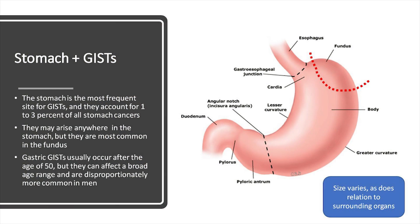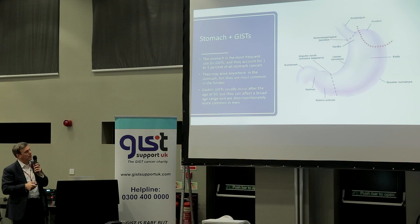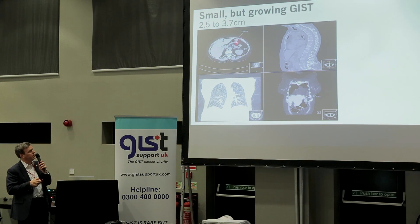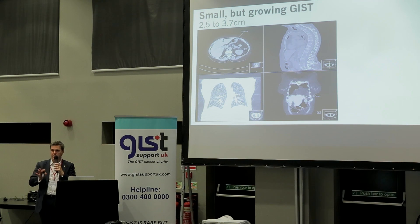Some of the surgery is dependent on the organ of origin. The stomach is the most common site for GISTs, and they most commonly occur in the fundus. The spleen is nearby, but this is an area where you can take out a little bit of the fundus with very little functional compromise. Here's an example of a small GIST in the fundus — this one we decided to watch with CT scans every six months, but it grew to about 3.7 centimetres and came out very nicely laparoscopically.